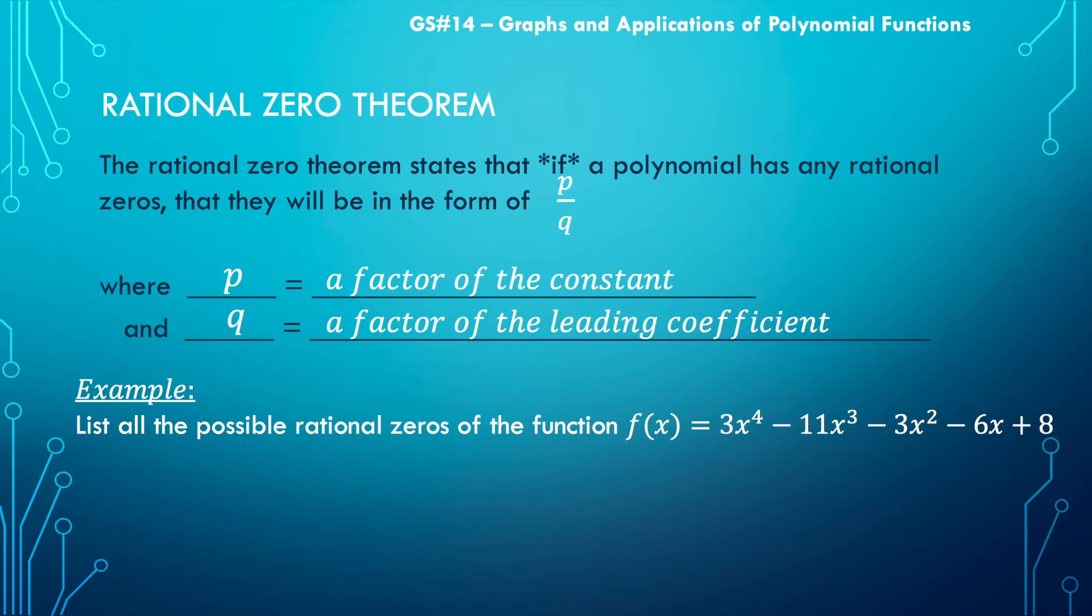Now, can a polynomial have zeros that are not rational? Well, yes, you could have zeros at like one plus the square root of three, one minus the square root of three. So what this is saying is, if there exists a rational zero for a specific polynomial, it will present in this form.